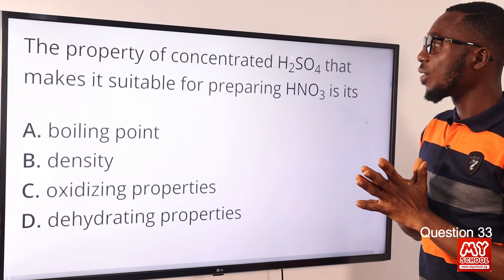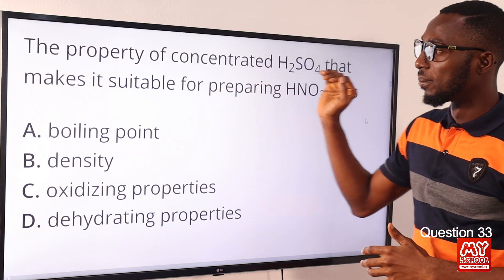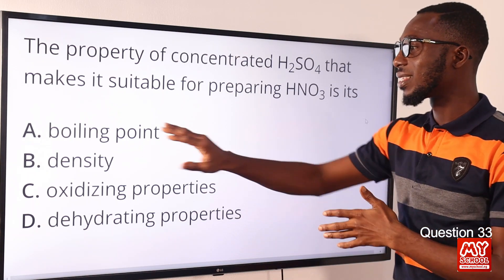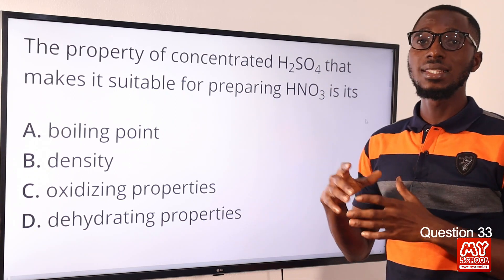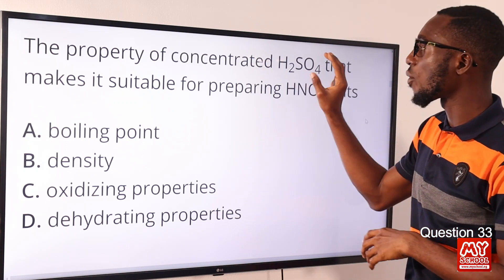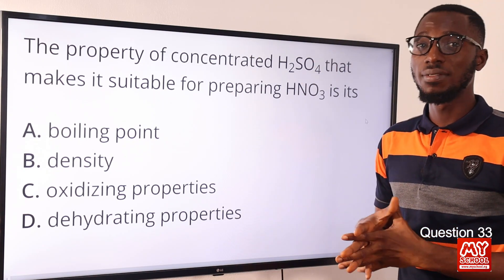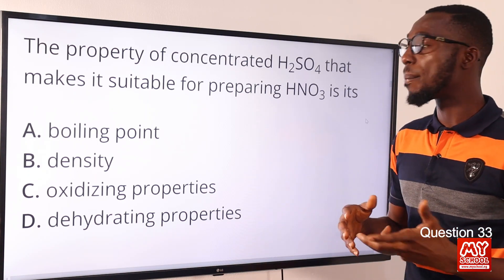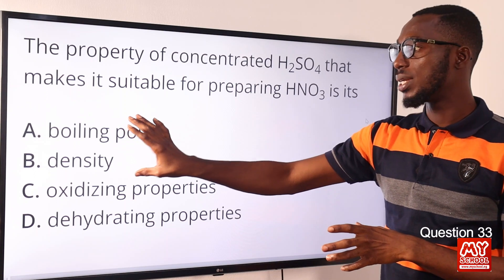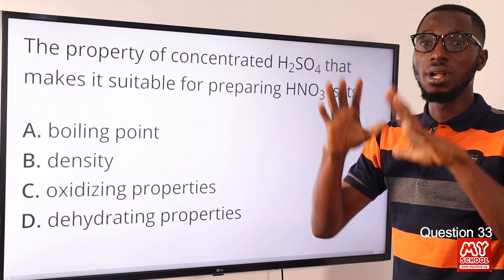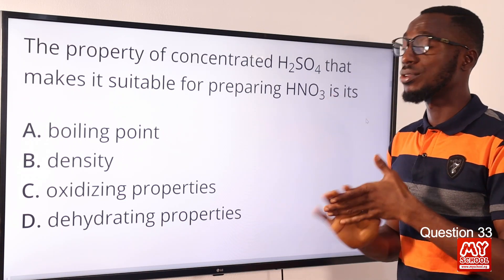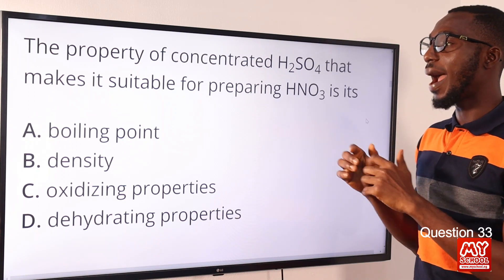Question 33. The property of concentrated H2SO4 that makes it suitable for preparing HNO3 is its high boiling point. Concentrated H2SO4 has the ability to displace volatile acids from their corresponding salts; this depends on the high boiling point of concentrated H2SO4. This is used in qualitative analysis to detect acid radicals. This experiment requires an all-glass apparatus because there will be attacks on any cork or rubber used. The correct option here is option A: high boiling point.